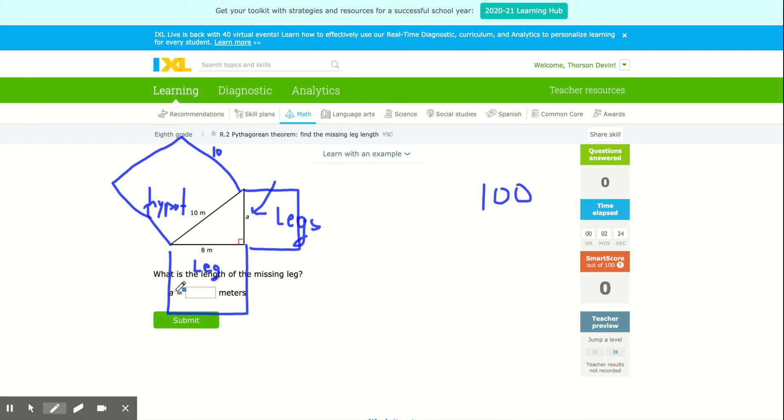The area of this bottom square, which is one of the smaller squares, which has a length of 8, is 8 by 8. 8 times 8 is 64. I'm going to subtract that amount from 100 to get 36.